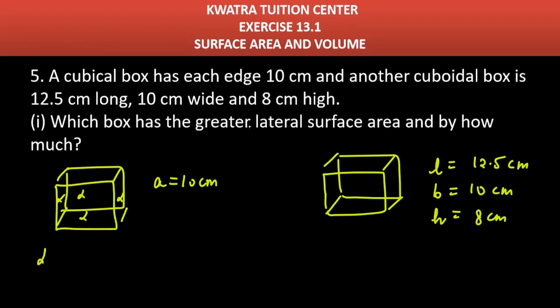So the formula for lateral surface area of this one is 4a² because there are 4 squares here - a² + a² + a² + a². And here you have to find the value. Here it is 10, so 10² is 100, 100 × 4 is 400 cm².